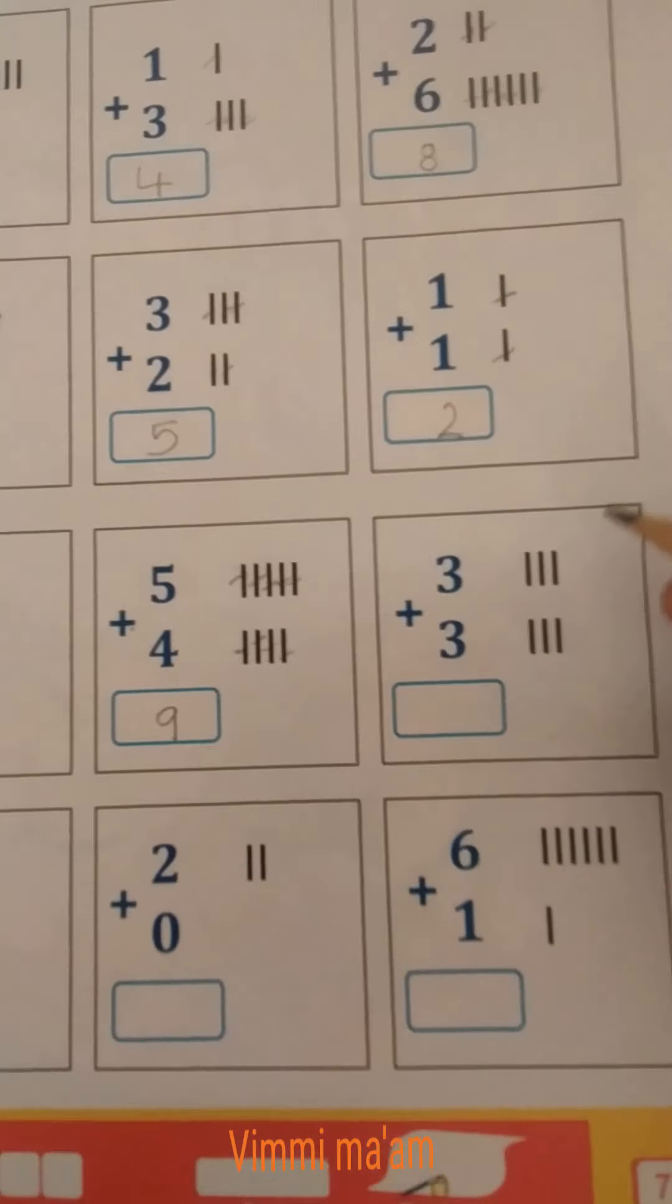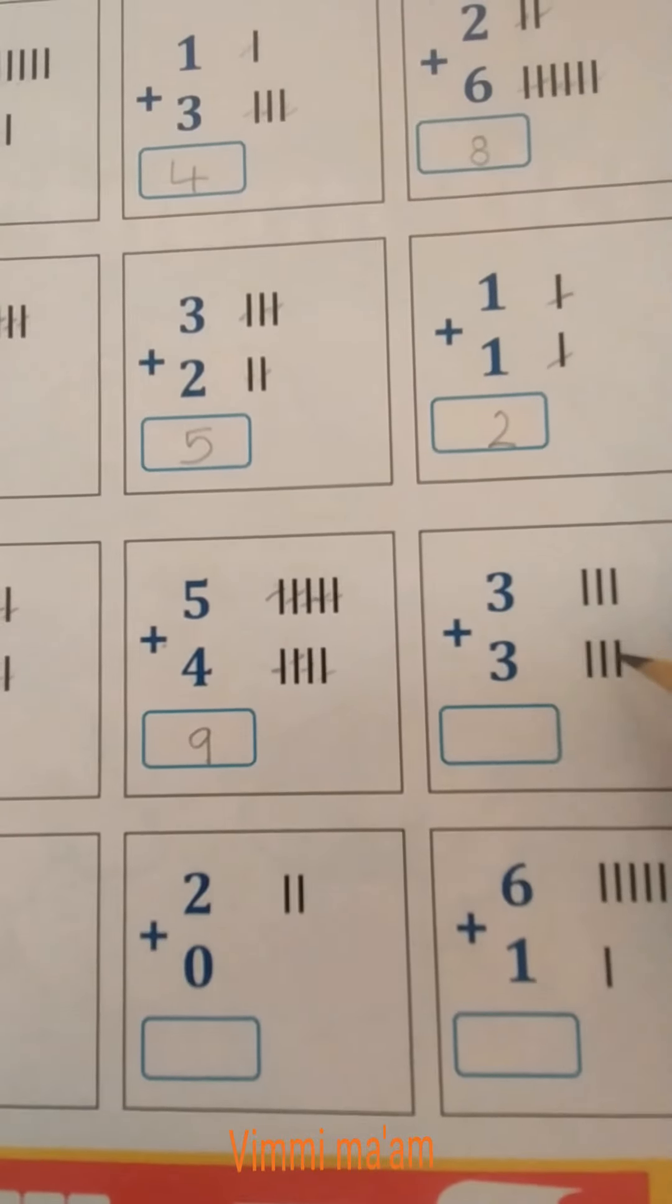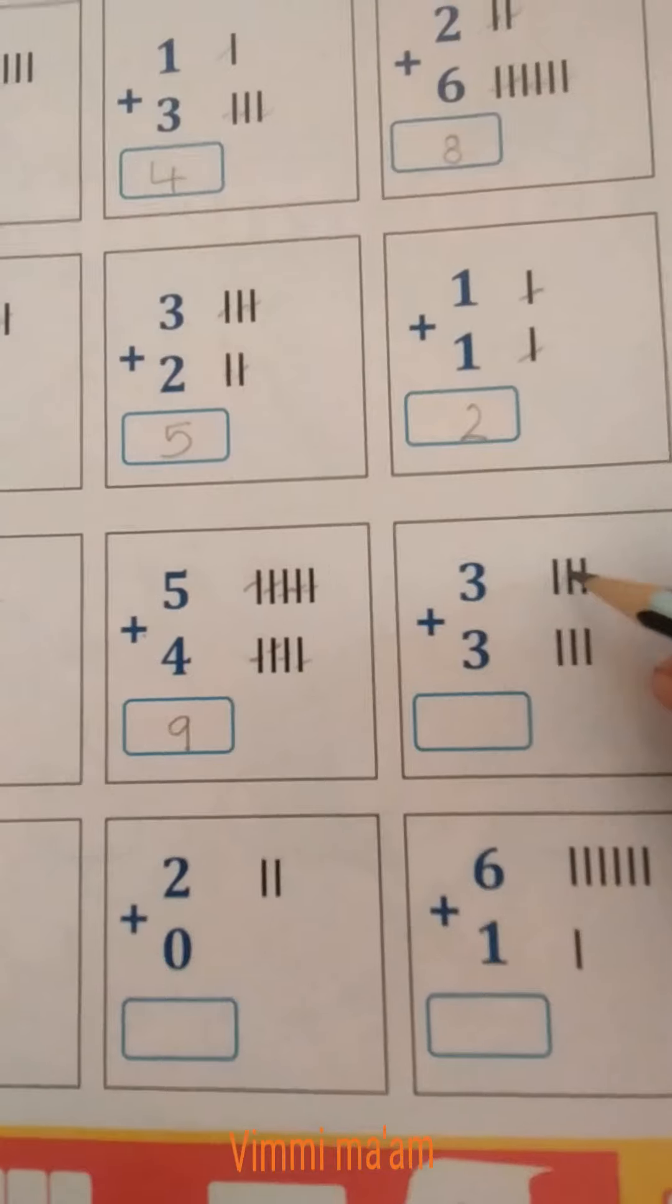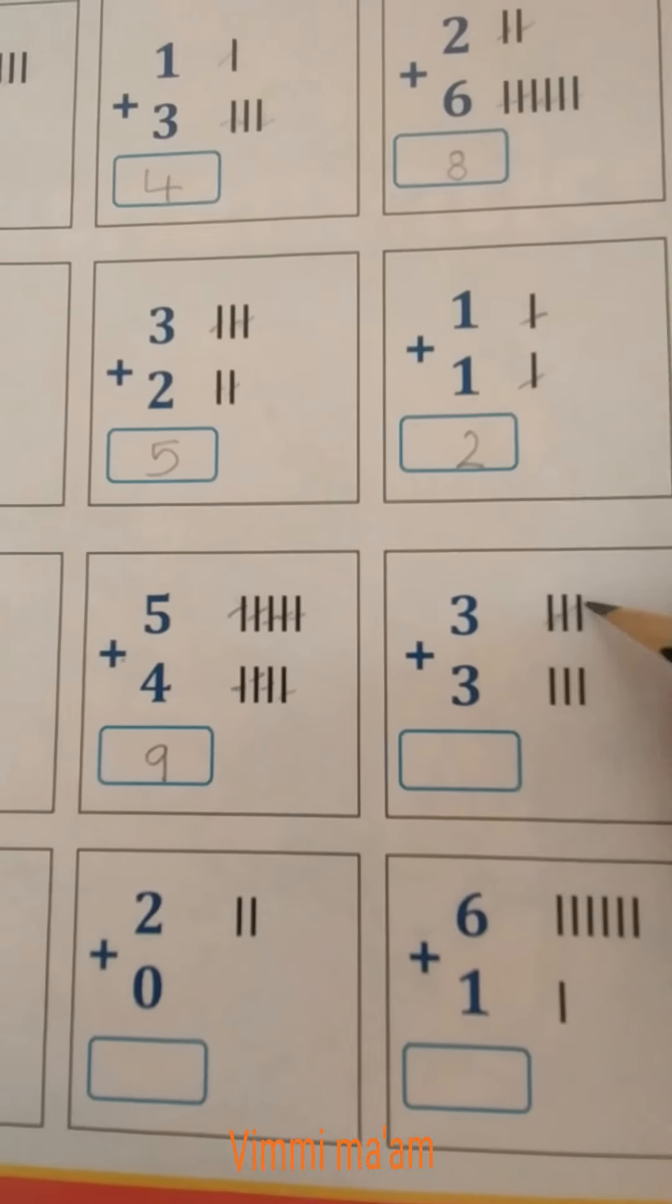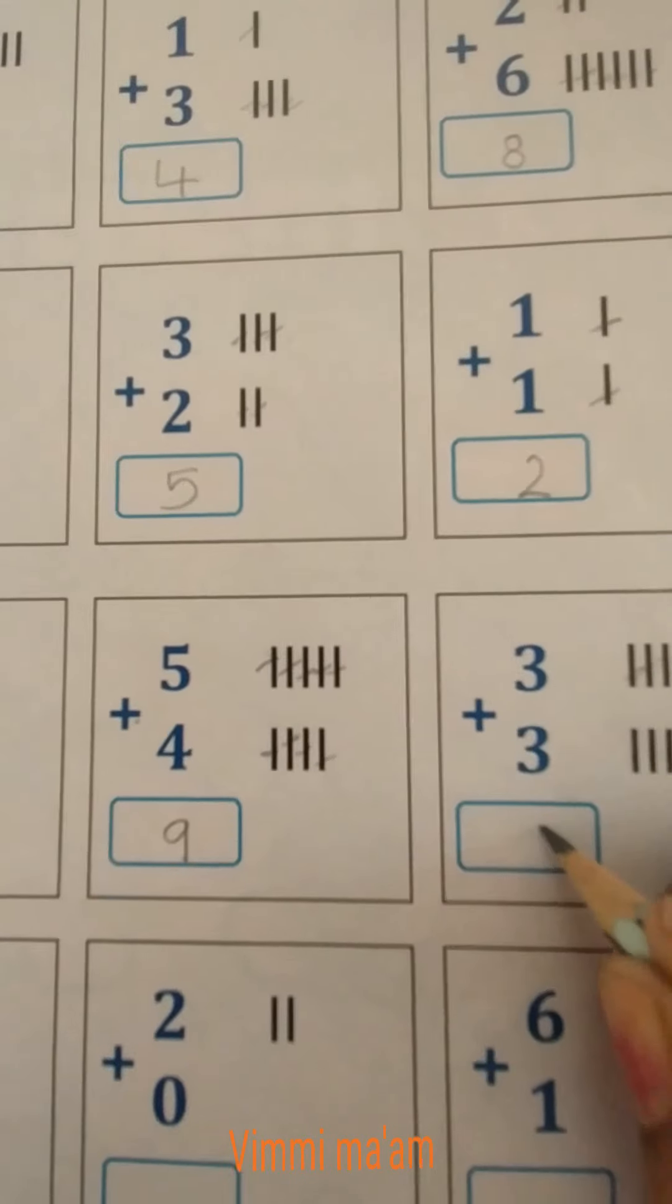3 plus 3. For the first 3, we draw 3 lines. For the second 3, we also draw 3 lines. Now counting: 1, 2, 3, 4, 5, 6. So we write number 6.